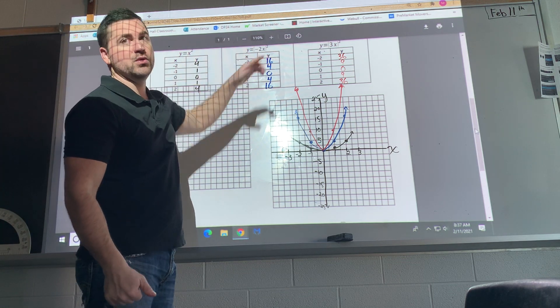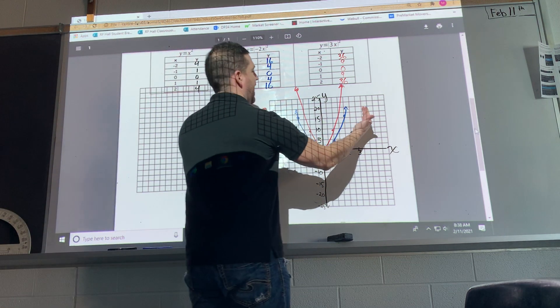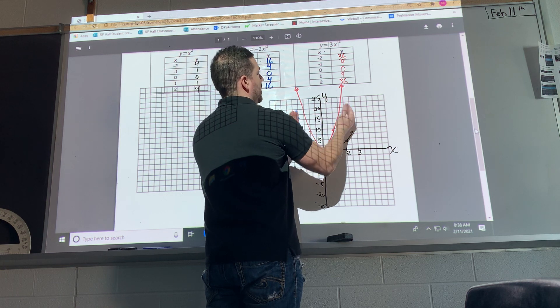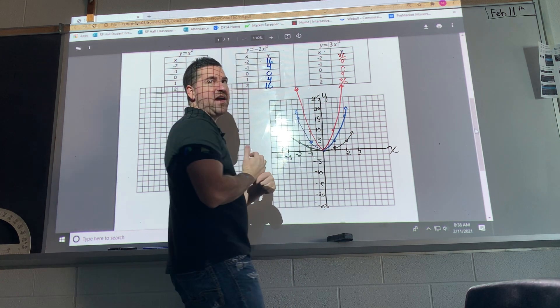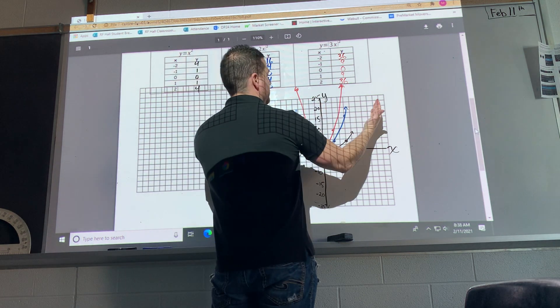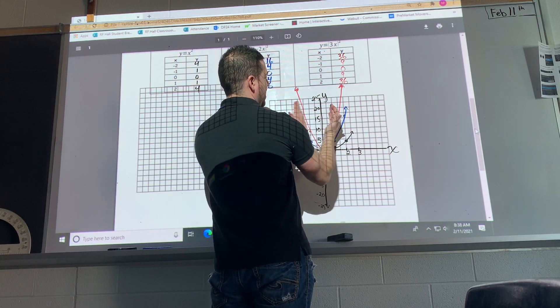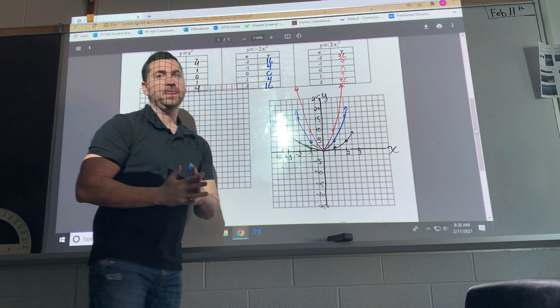So we compress it by a half here, and this one, we compress it by a factor of 1 over 3. So when we compress it, it gets skinnier.